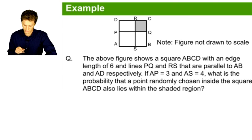The above figure shows a square ABCD with an edge length of 6 and lines PQ and RS that are parallel to AB and AD respectively. If AP equals 3 and AS equals 4, what is the probability that a point randomly chosen inside the square ABCD also lies within the shaded region?